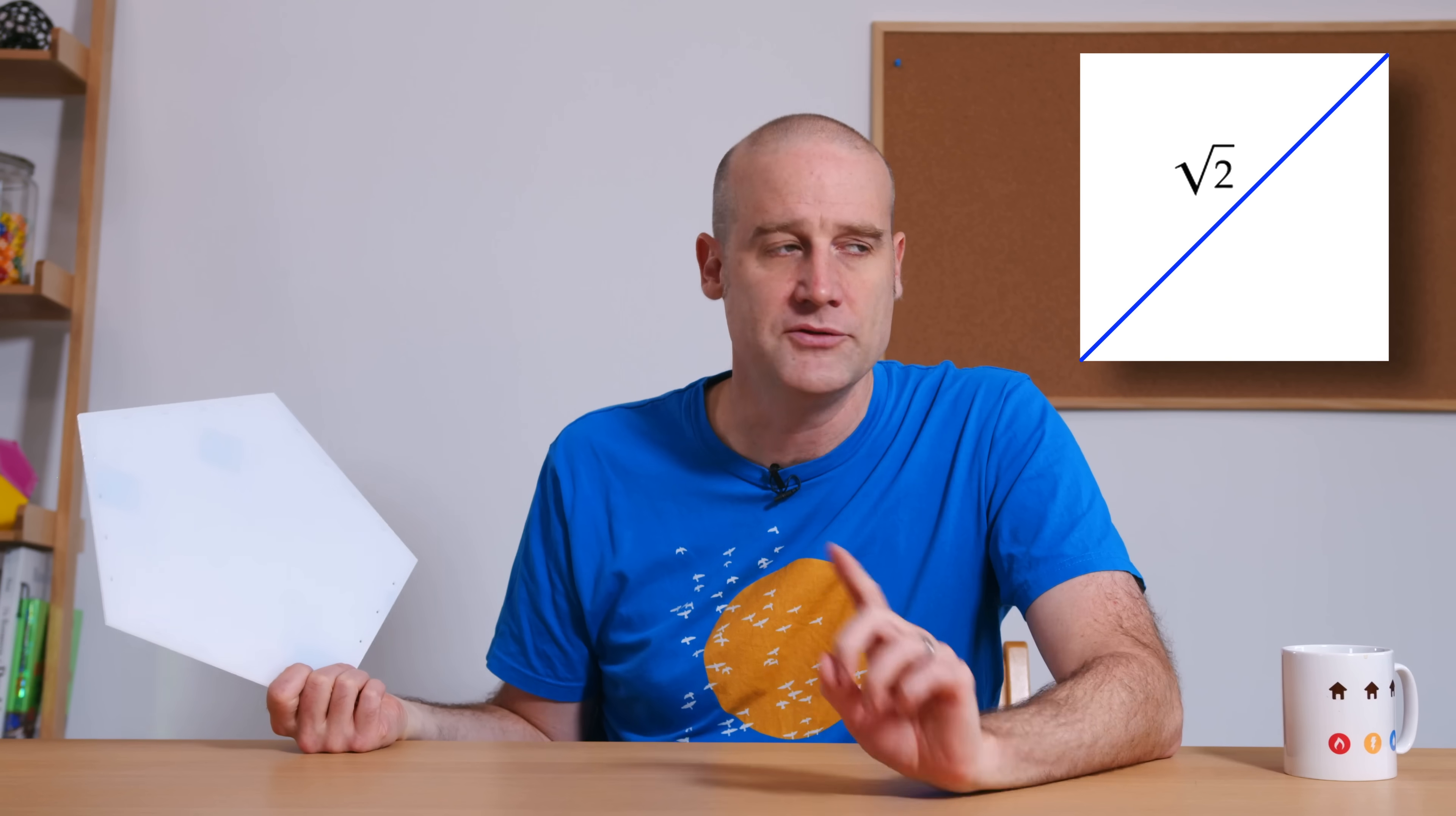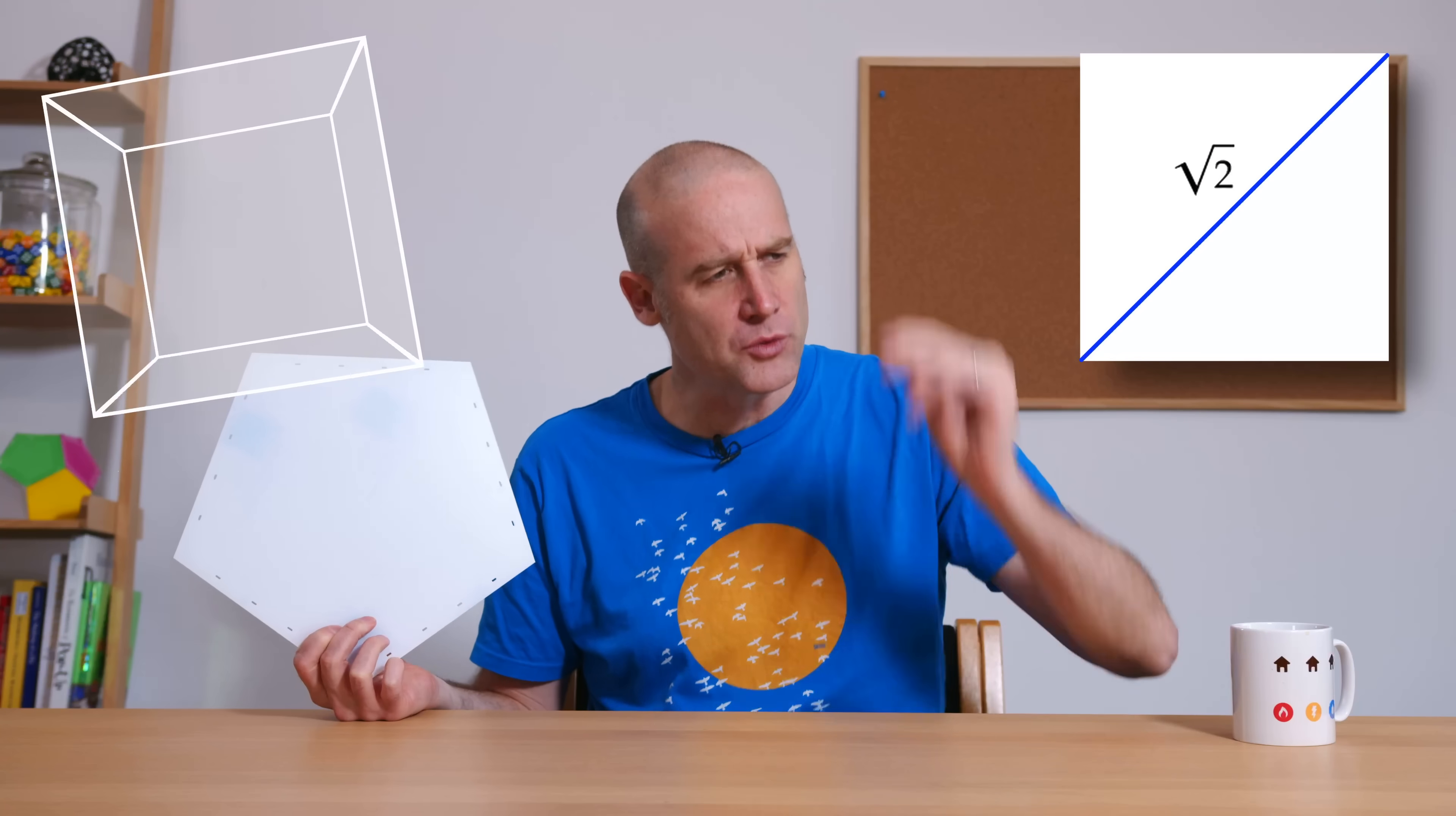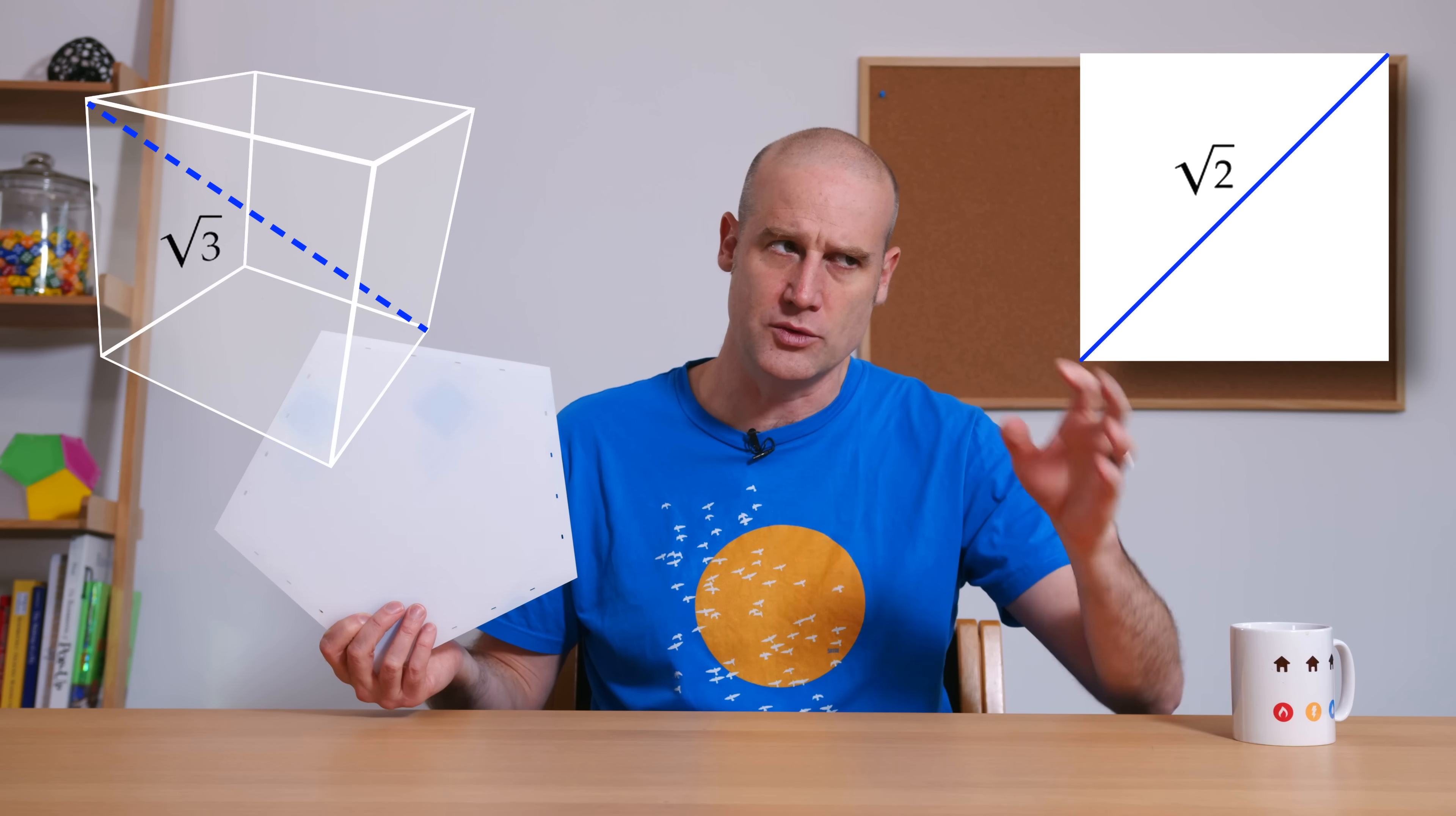However, if you take a square and you go up a dimension and make a cube, the space diagonal is root 3 times the unit edge. Oh my goodness, so a square to a cube goes from root 2 to root 3.